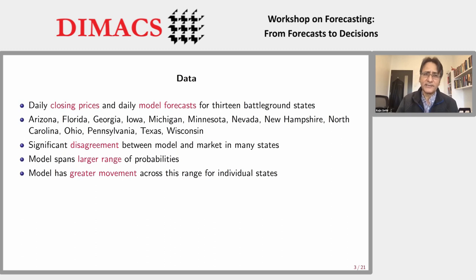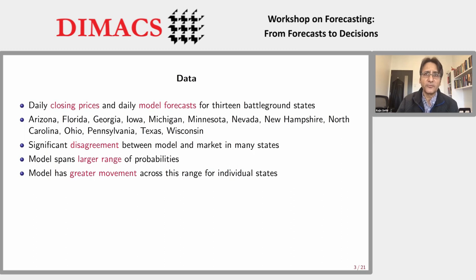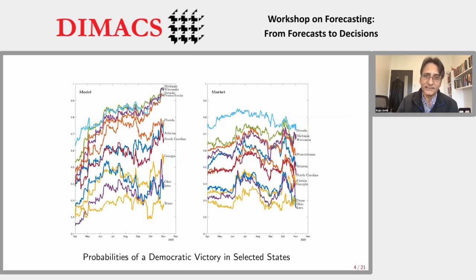The 13 states we look at were all considered competitive at one point or another. We don't take the more extreme states because markets are known to perform poorly when probabilities are close to zero or one, for reasons having to do with liquidity and leverage. The real value of markets arises when there's genuine uncertainty, and so we're focusing on these battleground states.